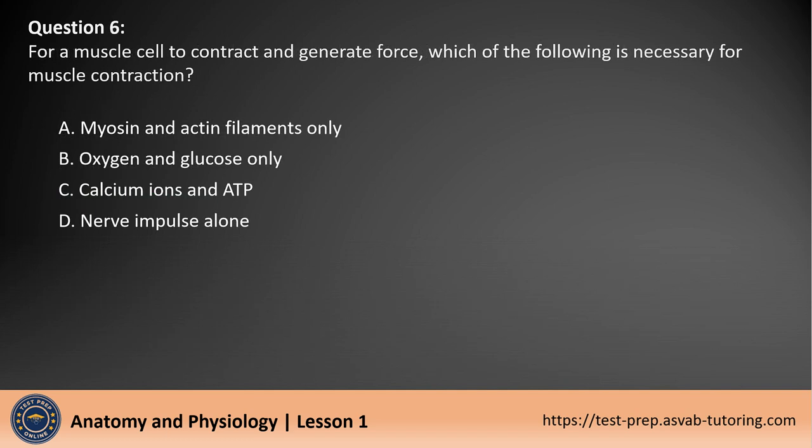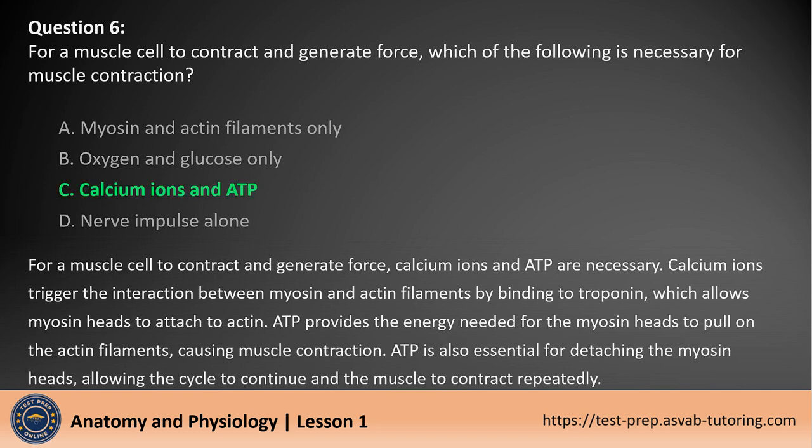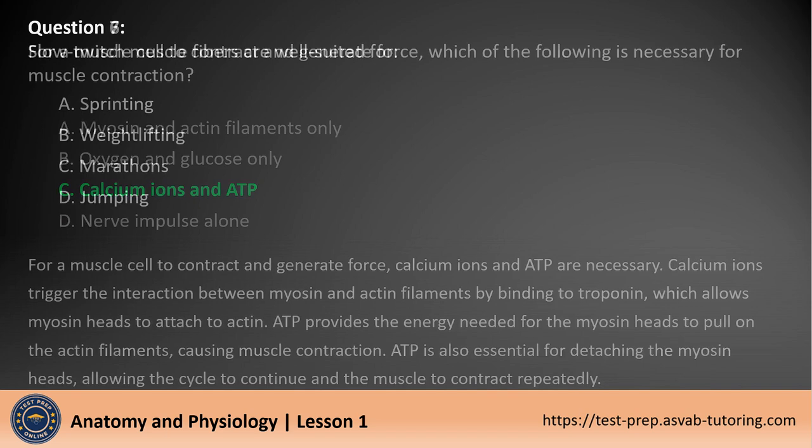Question 6. For a muscle cell to contract and generate force, which of the following is necessary for muscle contraction? A. Myosin and actin filaments only. B. Oxygen and glucose only. C. Calcium ions and ADP. D. Nerve impulse alone. The answer is C. Calcium ions trigger the interaction between myosin and actin filaments by binding to troponin, which allows myosin heads to attach to actin. ADP provides the energy needed for the myosin heads to pull on the actin filaments, causing muscle contraction. ADP is also essential for detaching the myosin heads, allowing the cycle to continue and the muscle to contract repeatedly.